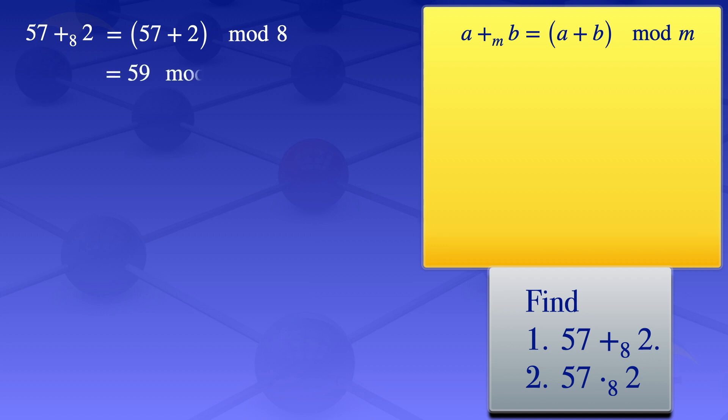We're finding the remainder when 59 is divided by 8. We have the remainder is b mod a, where b is the dividend and a is the divisor. Using the division algorithm, the remainder is b minus a times q, where q is the quotient given by the floor value of b divided by a.